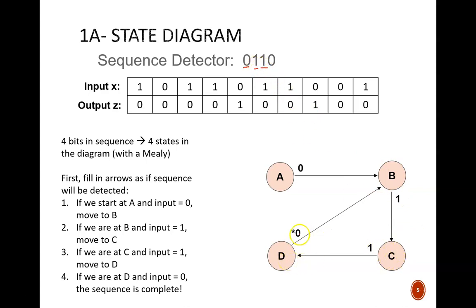Finally, a 0 will complete the sequence, which is why I place a star next to that arrow. But that last arrow looks a little strange, doesn't it? Why does it point to state B, even though the pattern so far suggests it should go to A?